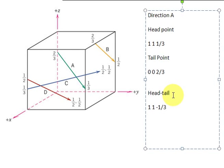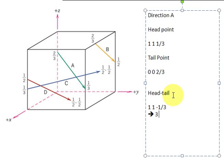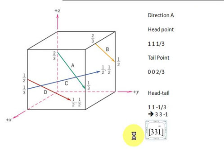From here, what you do is clear the fraction. So in other words, your answer will turn out to be 3, 3, and minus 1. Then after that, you enclose them in square brackets, so it will look like this. Thank you very much.